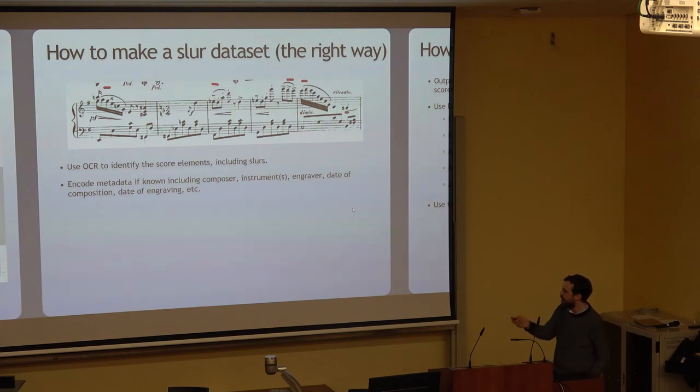A little red by the slur, so one, two, three, four, five, all sorts of goodies. There's a broken slur, there's a slur that potentially collides with the note head, there's various beaming slopes, there's articulations, different rhythmic values. Already this line alone has lots of goodness for how slurs can be different and the things that affect them. I would use OCR to identify the score elements, including slurs, and then encode metadata if known, including the composer, instruments, engraver, date of composition, date of engraving. This is just building the dataset. We would identify what these things are and have the metadata available to then pass the model.